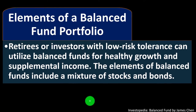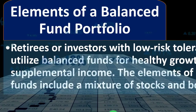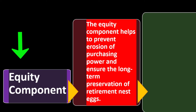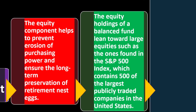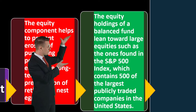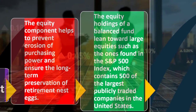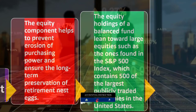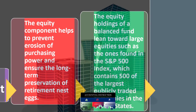Retirees or investors with low risk tolerance can utilize balanced funds for healthy growth and supplemental income. Elements of balanced funds include a mixture of stocks and bonds — a nice way to get that mix with one fund. The equity component helps prevent erosion of purchasing power and ensures long-term preservation of retirement nest eggs. The equity holdings of a balanced fund lean towards large equities such as those found in the S&P 500, which contains 500 of the largest publicly traded companies in the United States. These larger companies are less likely to have a huge dip and tend to be more stable.